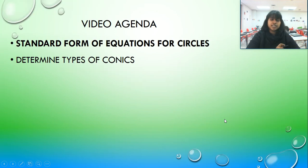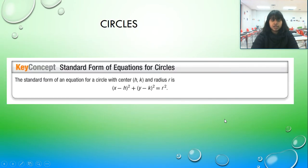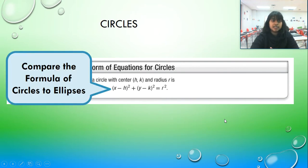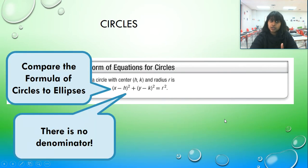Welcome back to the final section of our video about circles and ellipses. We're going to quickly learn to recognize the standard form of equation for circles. So here we have our formula: x minus h squared plus y minus k squared is equal to r squared. And what do you notice about that distinction from ellipses to circles?